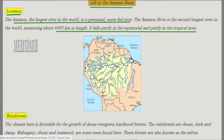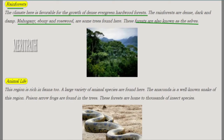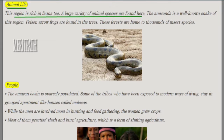Here we see the route of the Amazon River. The climate here is favorable for the growth of dense evergreen hardwood forests. Rainforests are always dense, dark, and damp. Trees found here are mahogany, ebony, and rosewood. These forests are also known as selvas. This is an image of the Amazon rainforest.